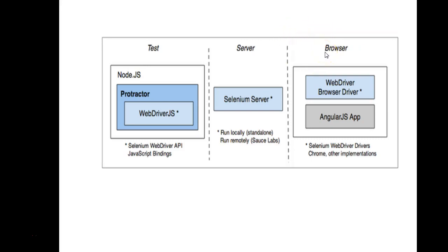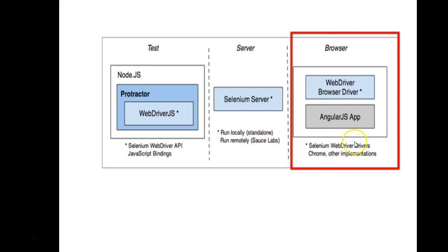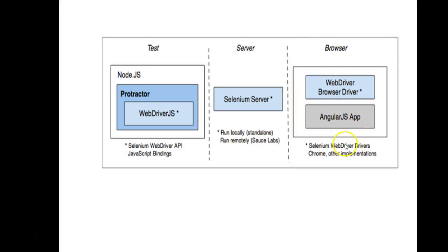The next layer in Protractor's architecture is the browser layer. Here we have different web browser drivers and the AngularJS app, because the AngularJS application runs on the browser. All browsers supported by Selenium are also supported in Protractor — for example, Firefox driver, Chrome driver, and Internet Explorer driver are all part of this browser layer.